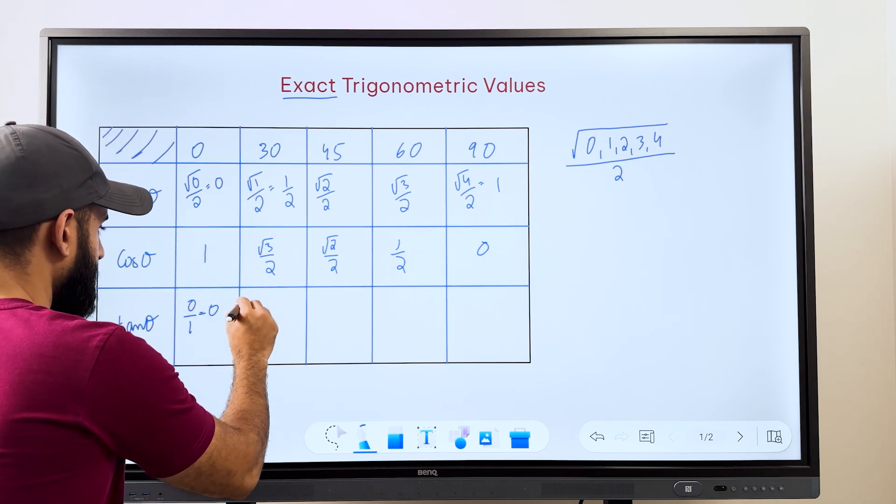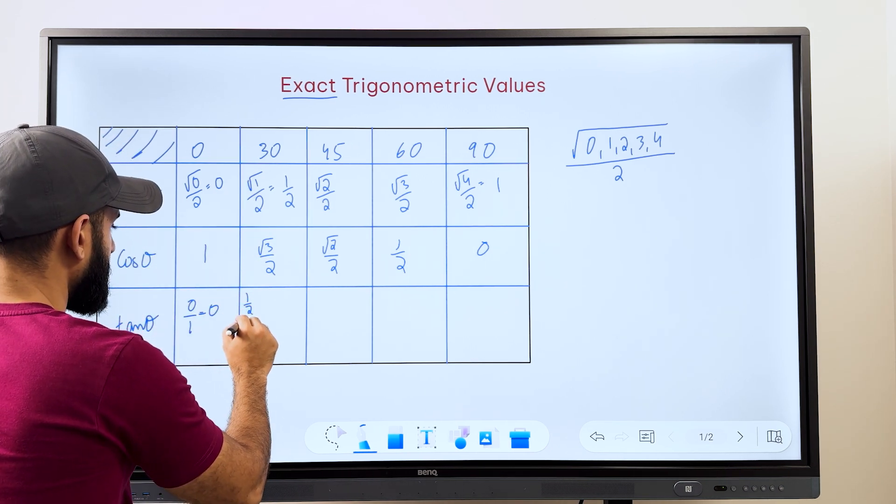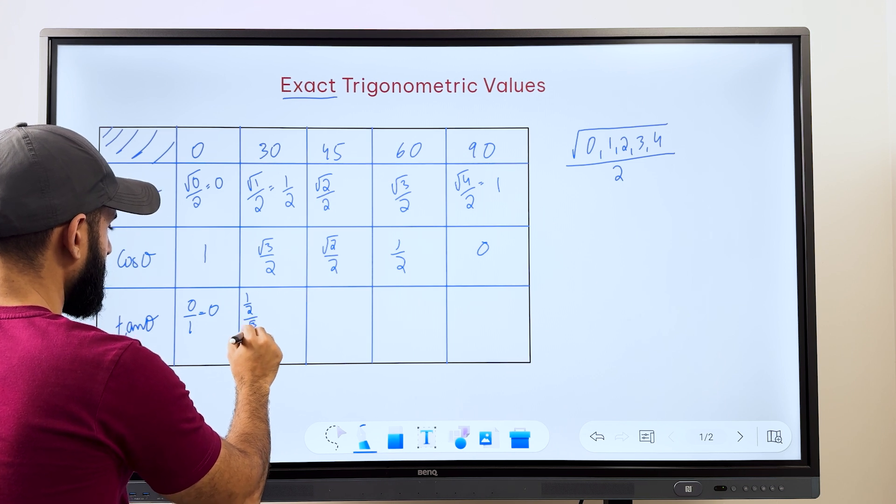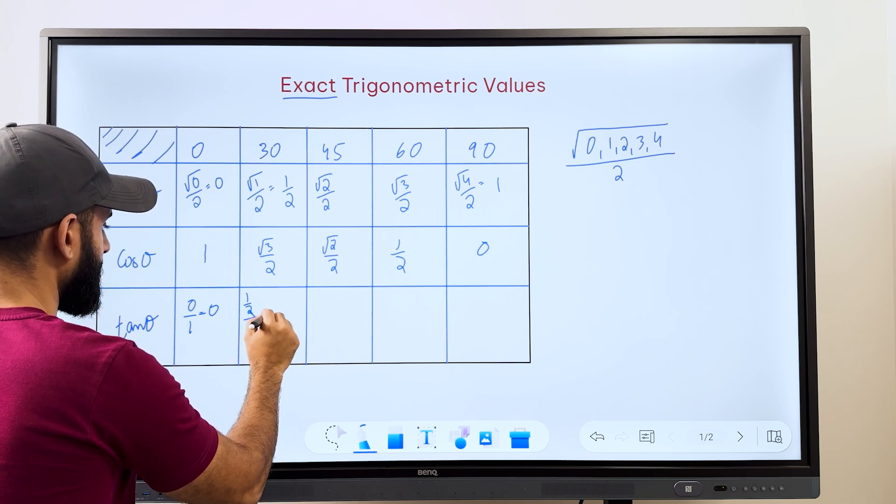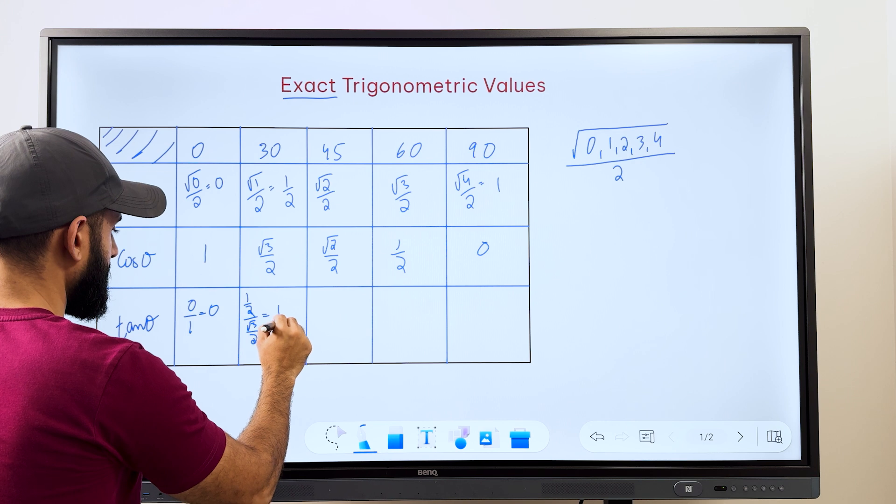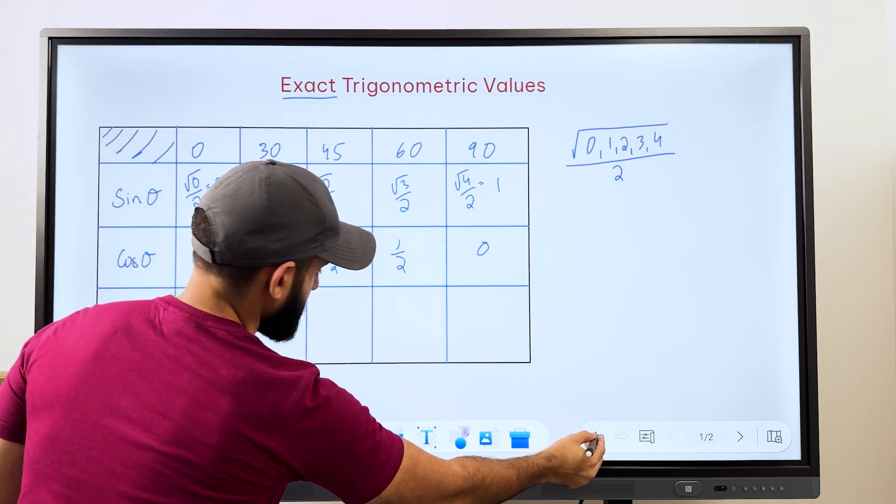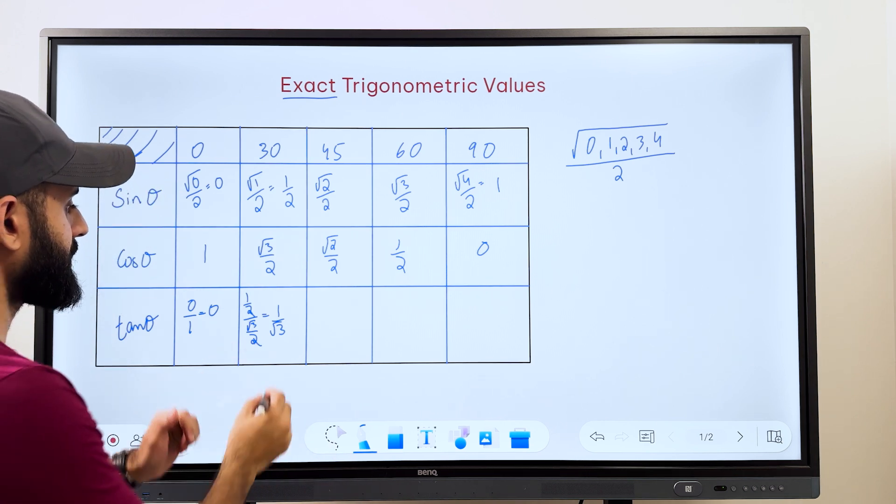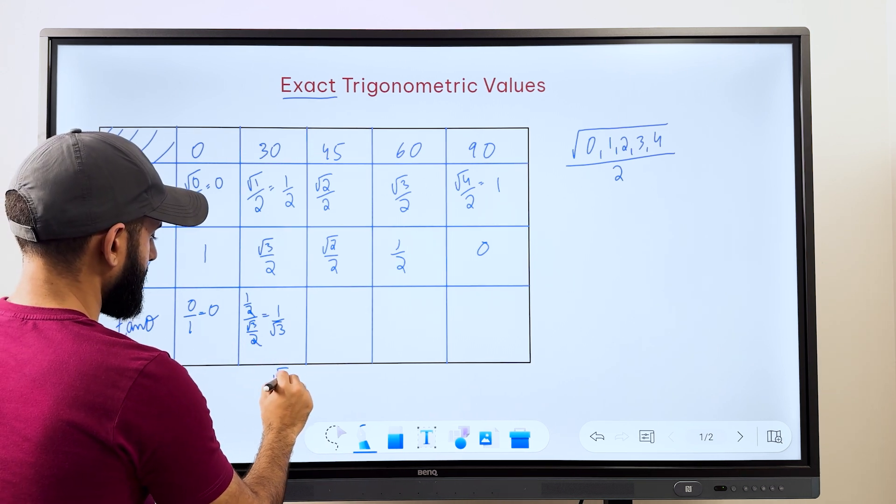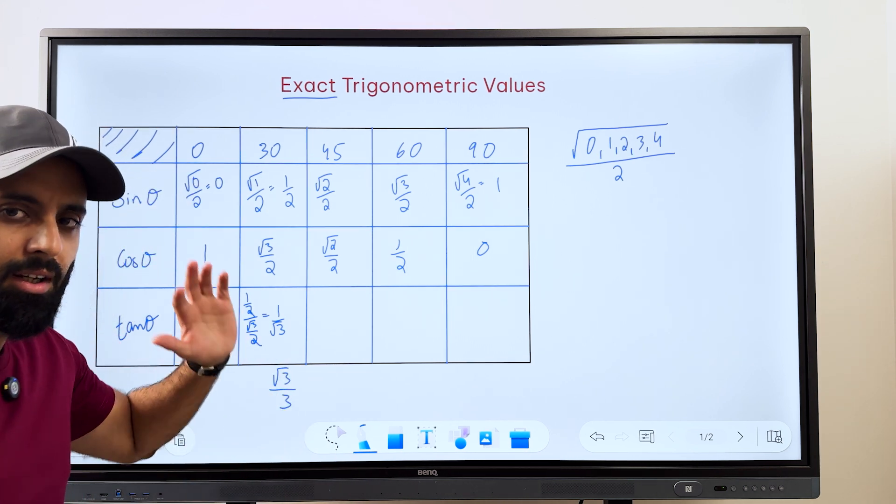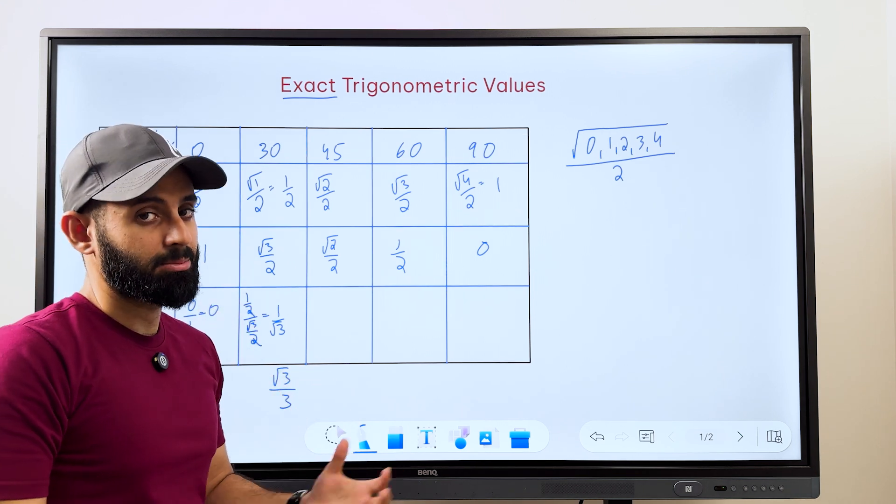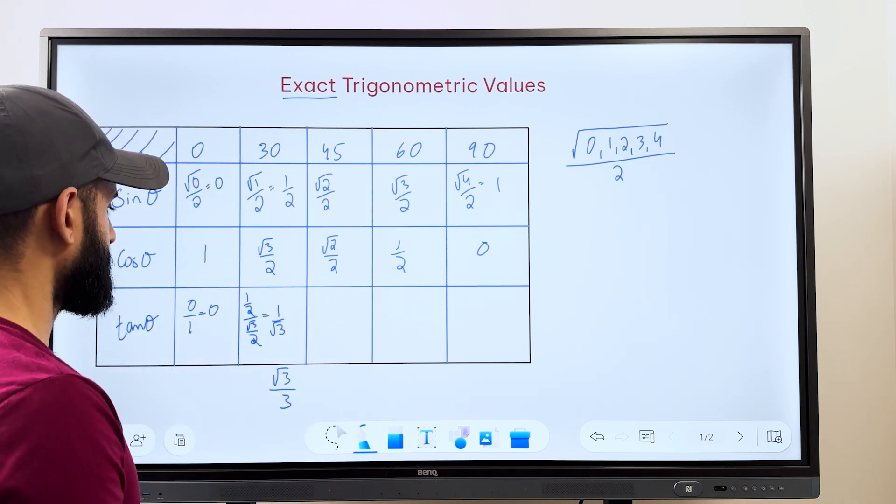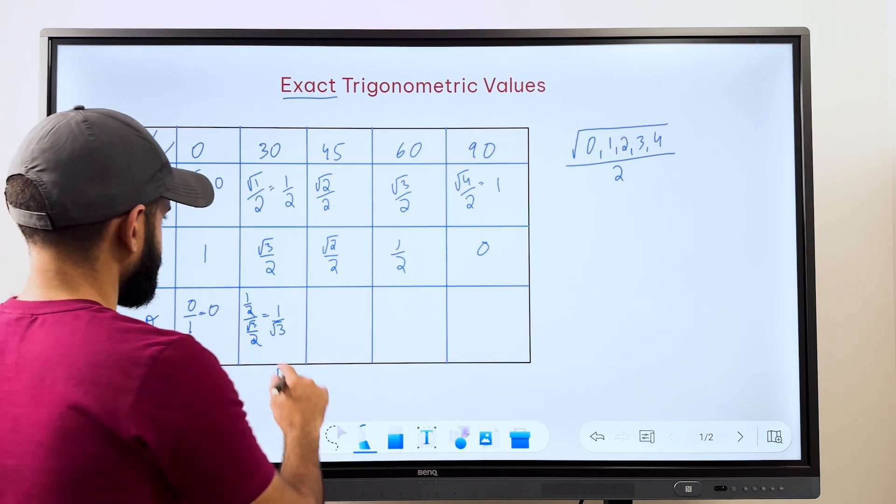Then 1 upon 2 divided by root 3 upon 2. So 1 upon 2 divided by root 3 upon 2, 2 and 2 cancel. And the answer is 1 upon root 3, which if you rationalize, you can also write as root 3 upon 3. So that's a concept, that's another concept by the way which has been added recently. I'll make a video on it soon. But yeah, you can do that.